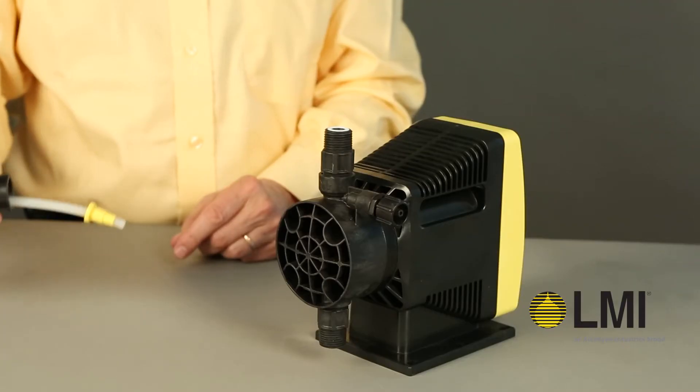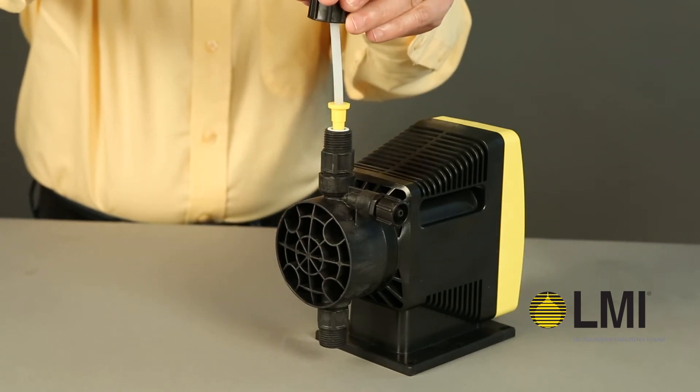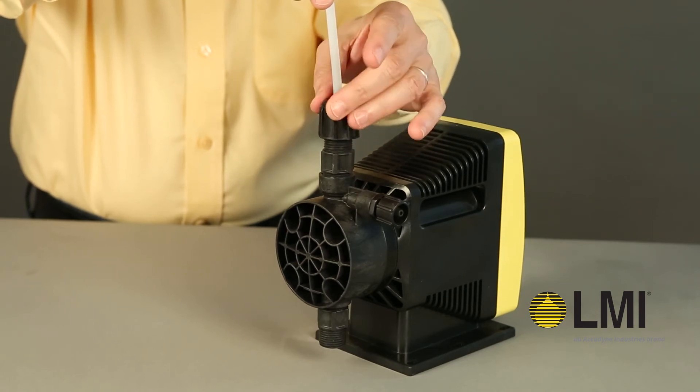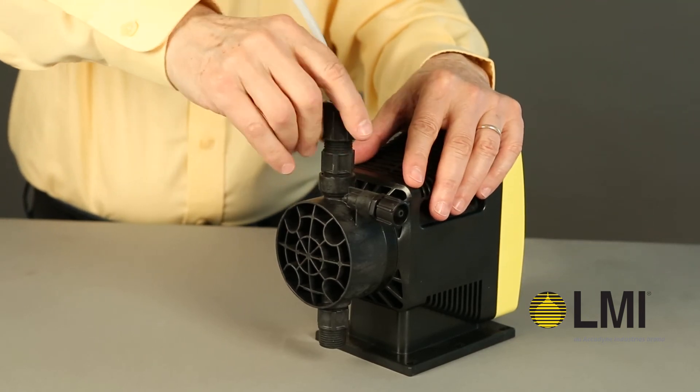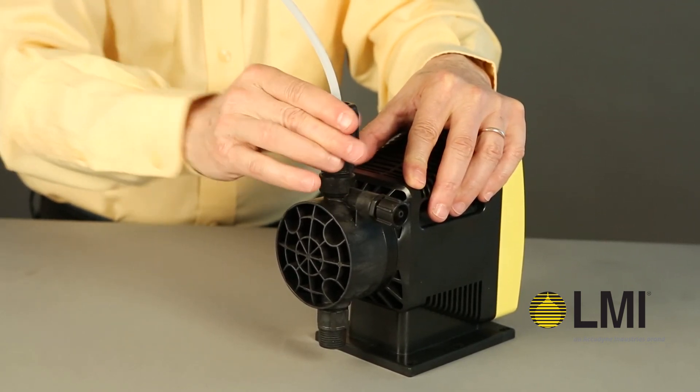The tubing assembly is now ready to be attached to LMI's standard ½ inch NPT BSP fitting. Ensure the fitting's O-ring remains intact. Insert the tubing and ferrule into the fitting and firmly hand tighten the coupling nut onto the fitting.